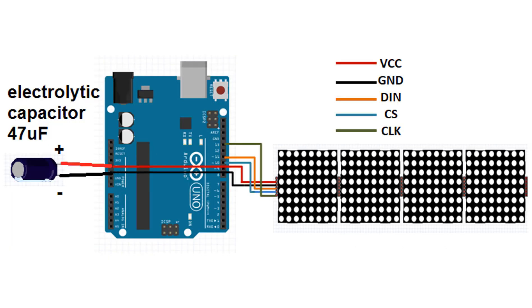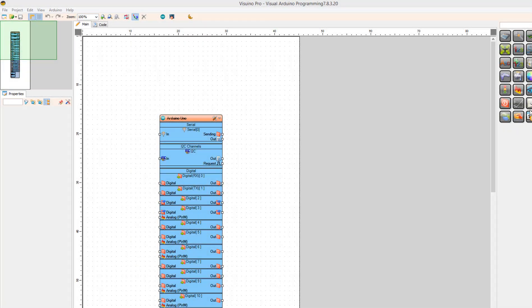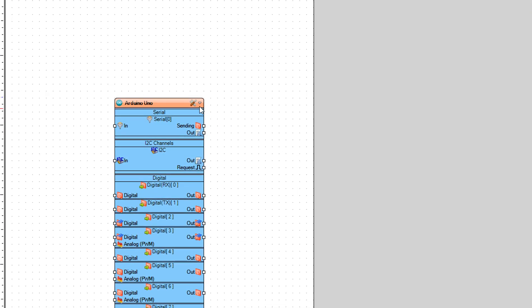If you experience any strange jumping of the dots or text not displaying properly, it could be voltage interference. In this case you can add a 47 microfarad electrolytic capacitor between the LED matrix VCC and GND — make sure you connect the capacitor correctly.